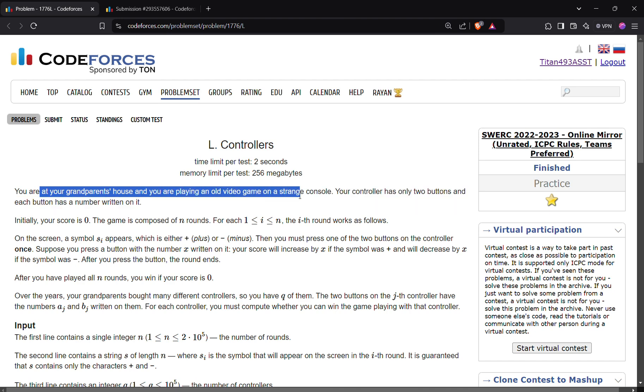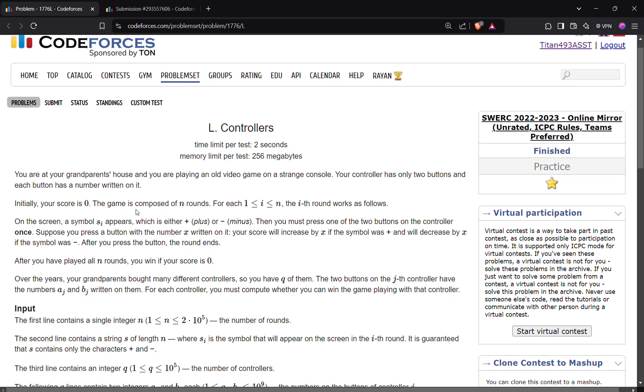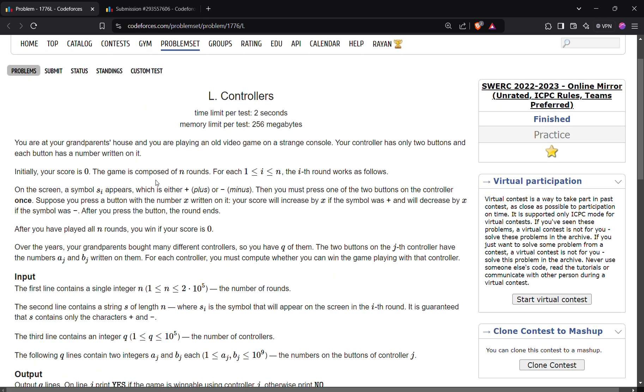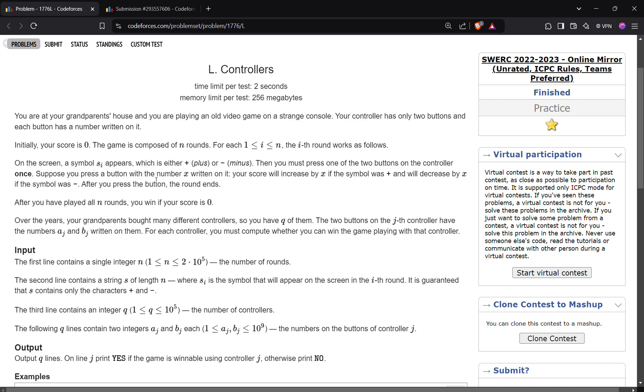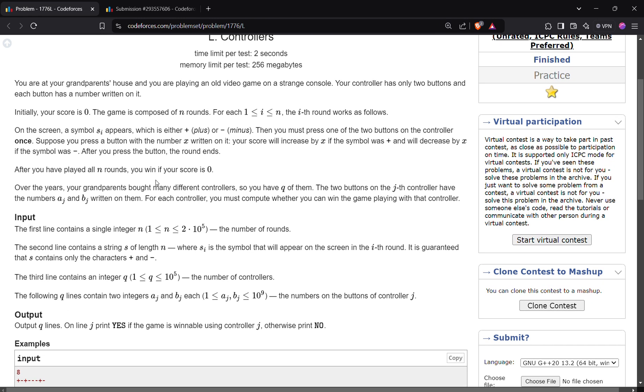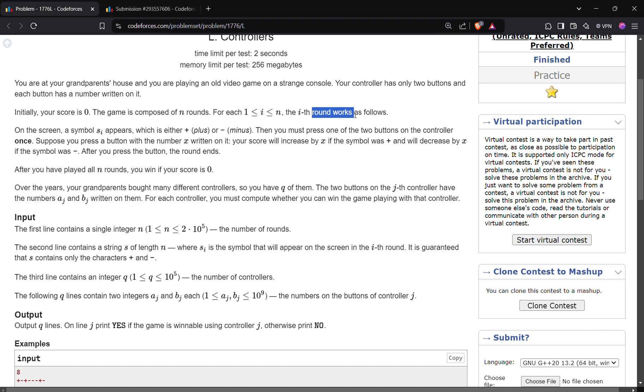Your controller has only two buttons and each button has a number written on it. Your score is 0 initially and the game is composed of n rounds. The ith round works as follows: on screen symbol si appears, means the ith character of that string appears.